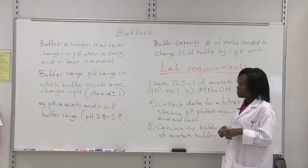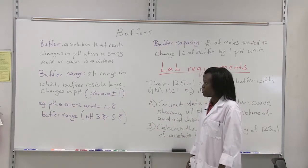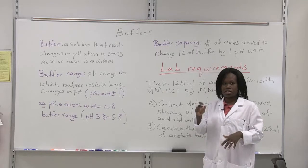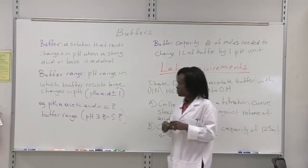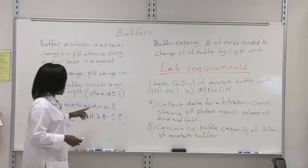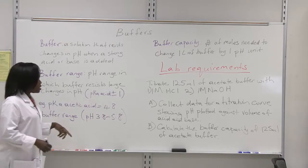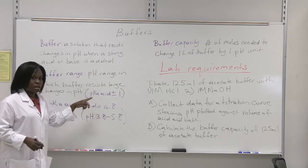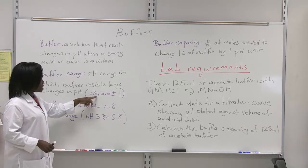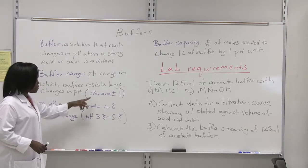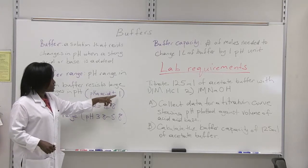The buffer range is a pH range in which the buffer is able to resist those large changes in pH. Normally, the buffer range can be determined if you know the dissociation constant of the weak acid that is a component of your buffer. The dissociation constant here is the pKa. The buffer range is normally the pKa of the acid plus or minus 1.